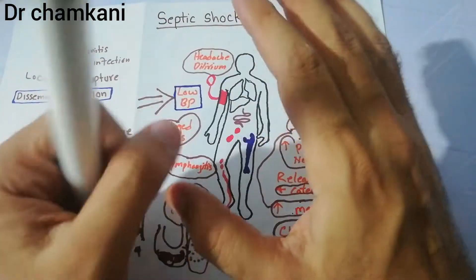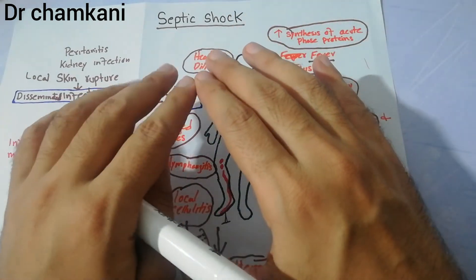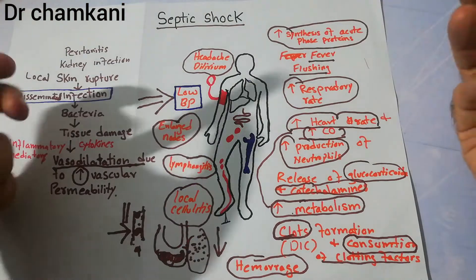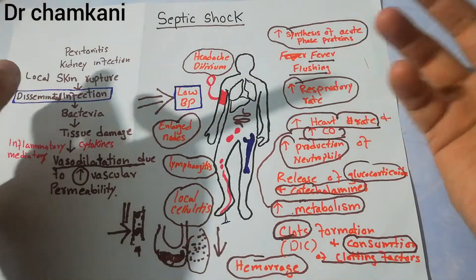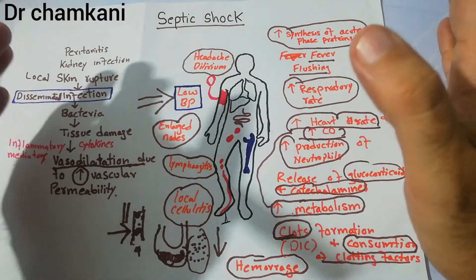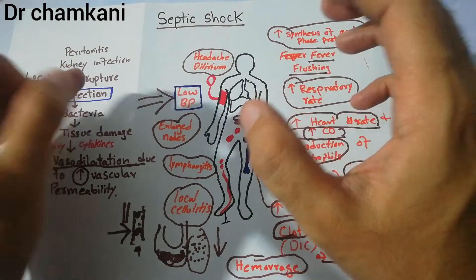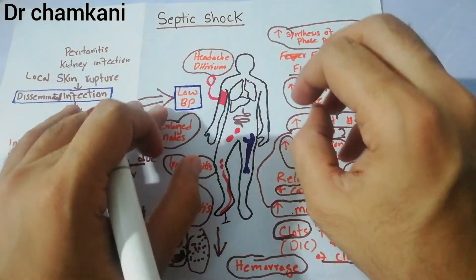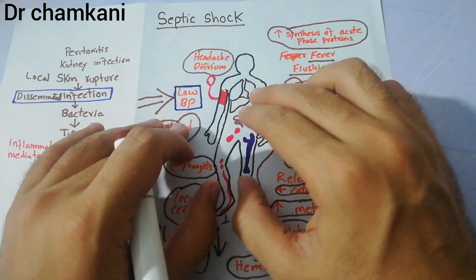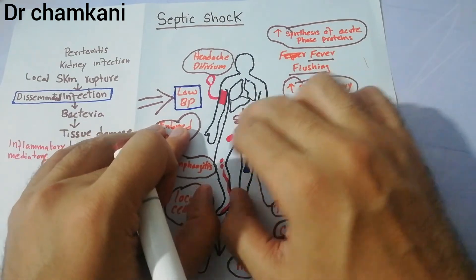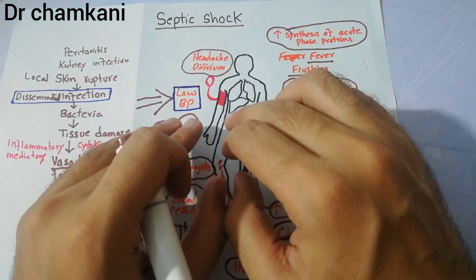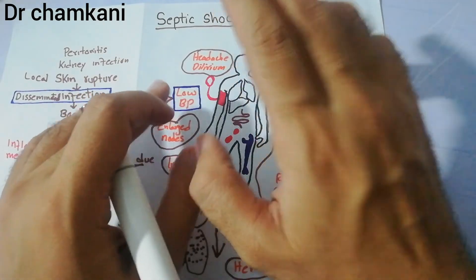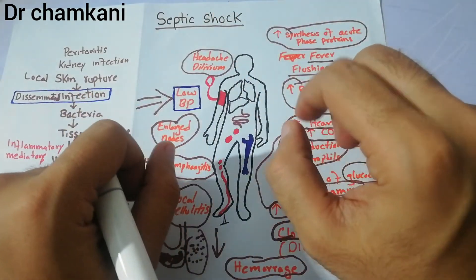From medicine and pathology perspectives there are many clinical criteria, investigations, and treatment options, so one small lecture is not sufficient to cover septic shock fully. But to give an idea: septic shock is the spread of infection from one focus throughout the whole body, which ultimately leads to shock. Thanks a lot for watching the video.